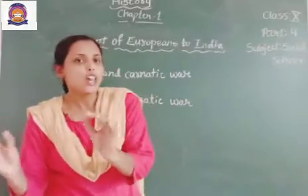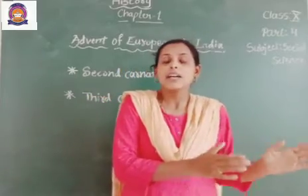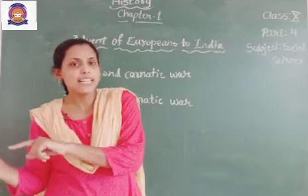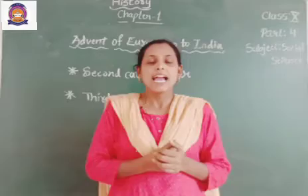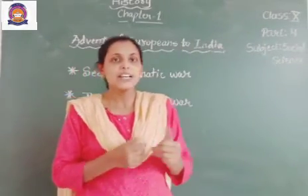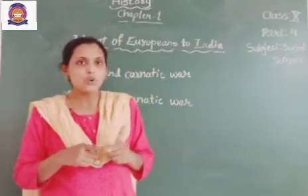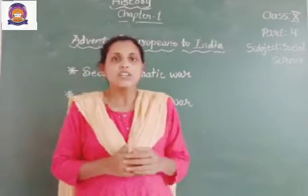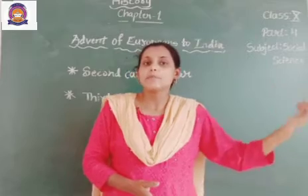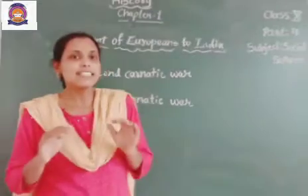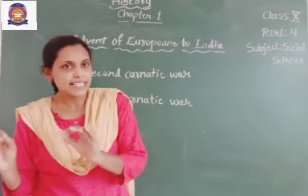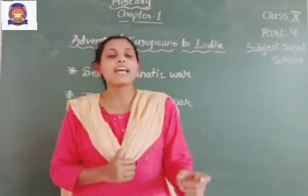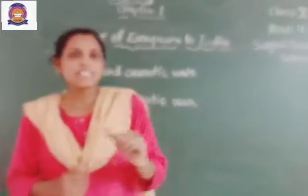Anwaruddin sent his army to defeat La Bourdonnais, but Anwaruddin's army had to face defeat and had to come back. A clash then took place between Duplex, the French governor, and La Bourdonnais. This situation was exploited in favour of the English — they gave money to La Bourdonnais, who returned back to Madras, the presidency of the British. Like this, the 1st Carnatic War ended with the Treaty of Aix-la-Chapelle, signed between France and England. This point I discussed in the previous class.